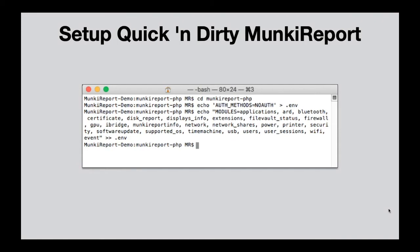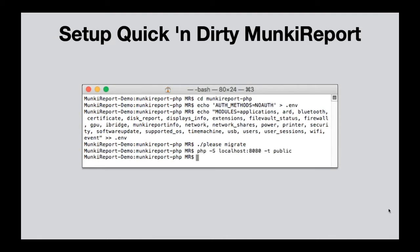We're going to echo out some of the more common modules — things like Bluetooth, users, network, displays, software update — and echo that into our environment file. Then we'll run 'please migrate,' which sets up the tables within the database for the Monkey Report instance. You don't need to do anything with the database manually — it's all handled automatically. Lastly, we'll tell PHP to start a web server on localhost port 8080 from the public folder within Monkey Report.